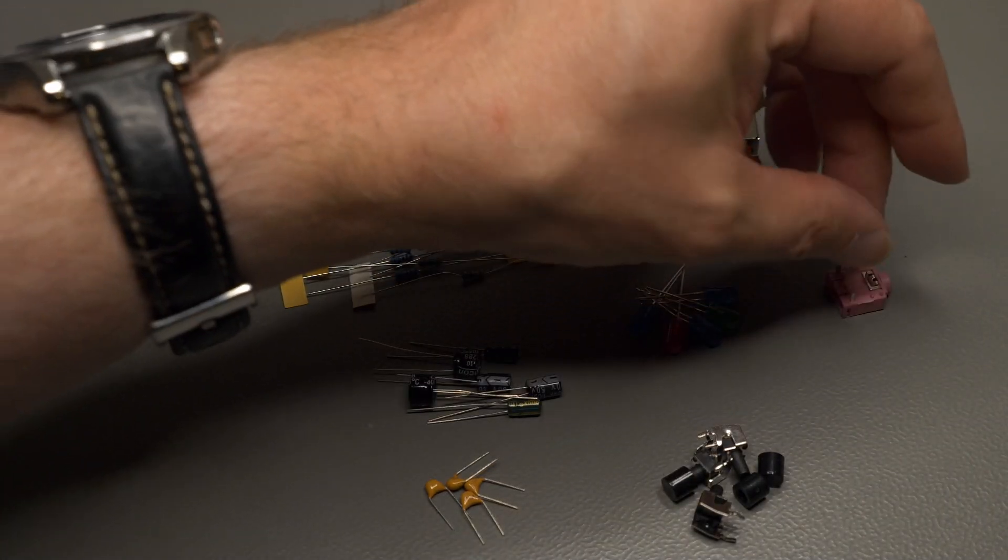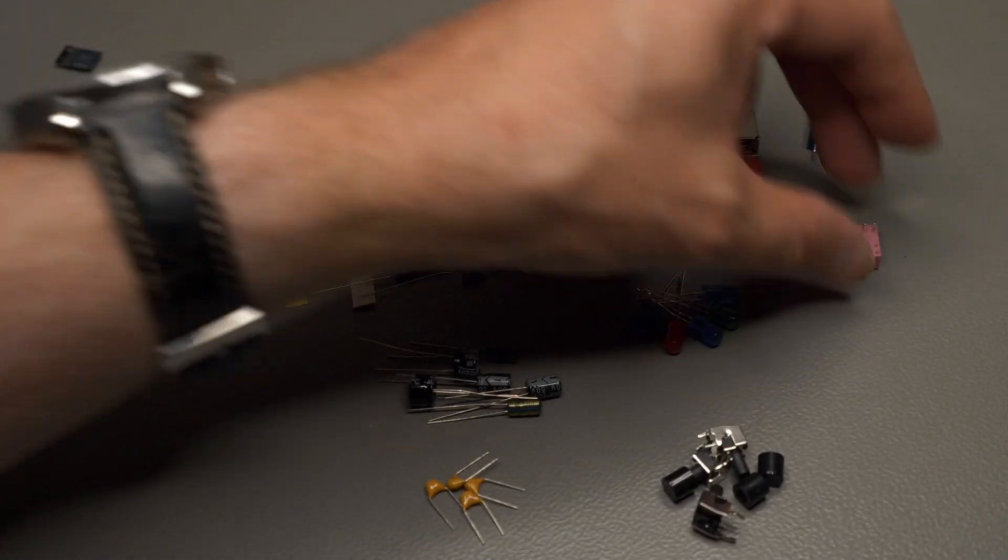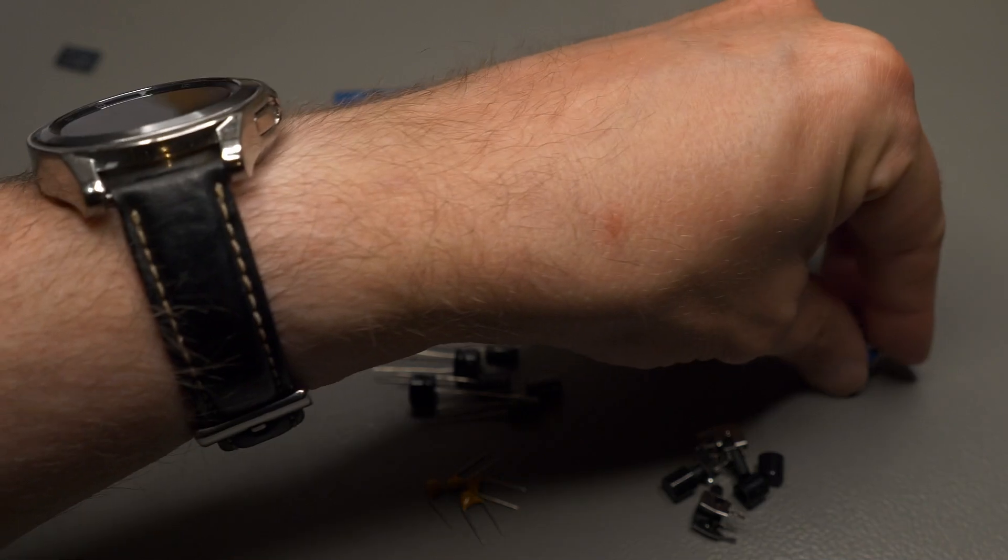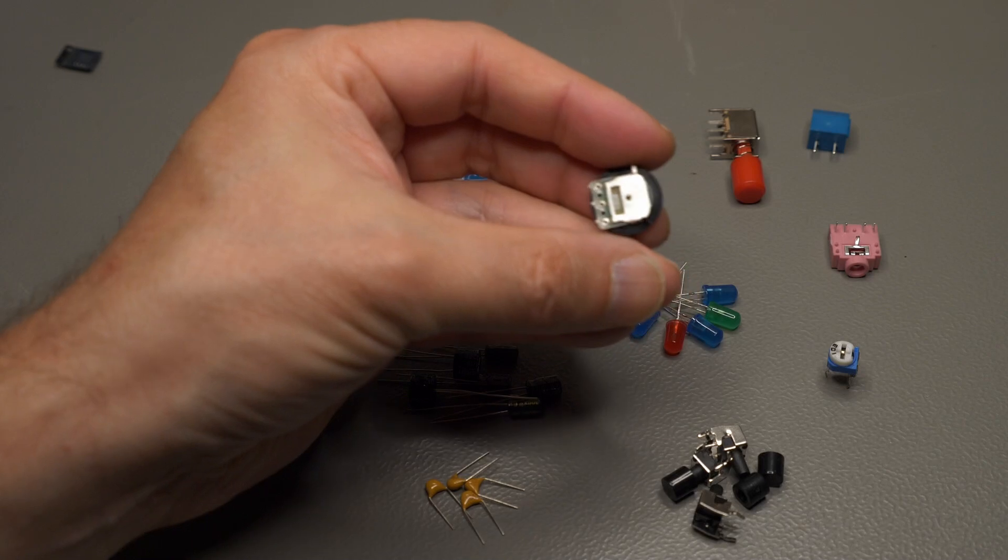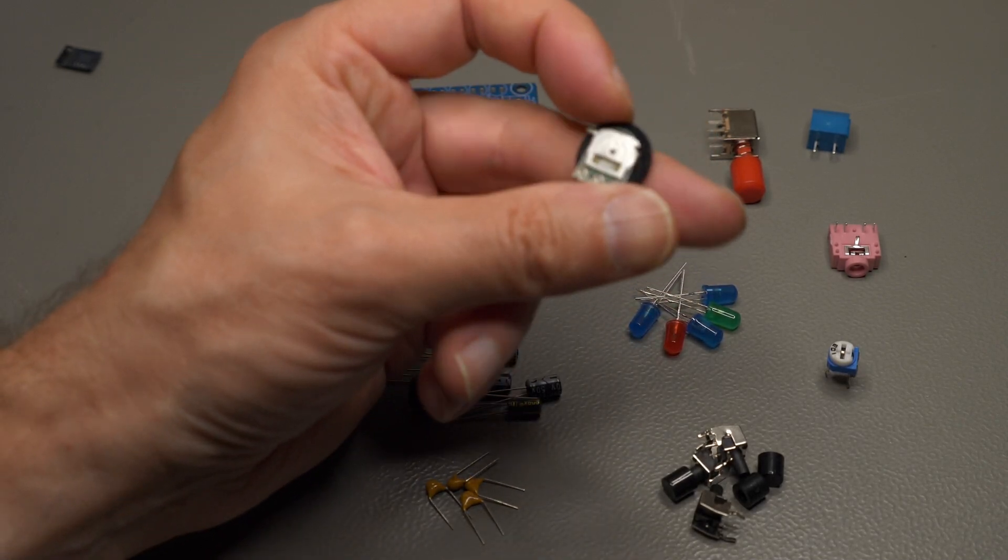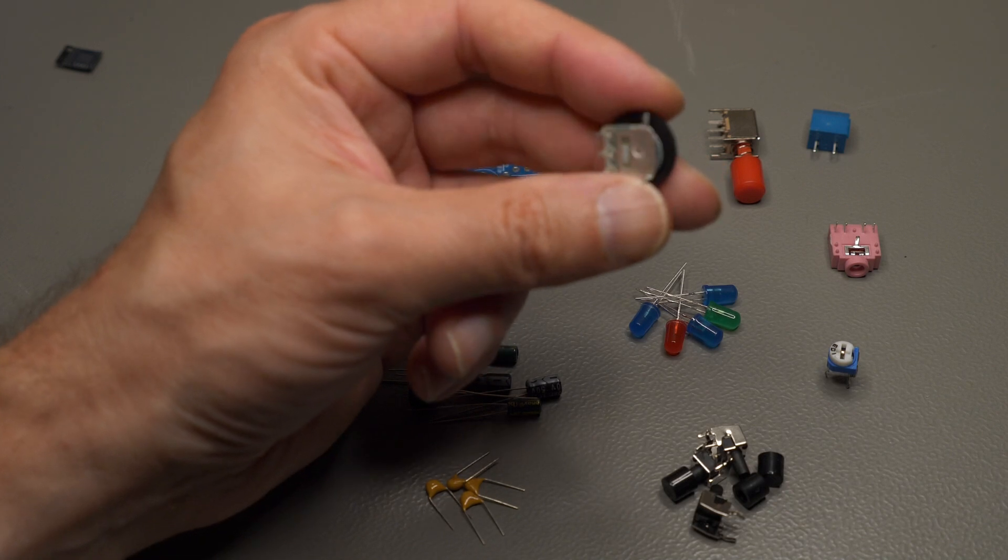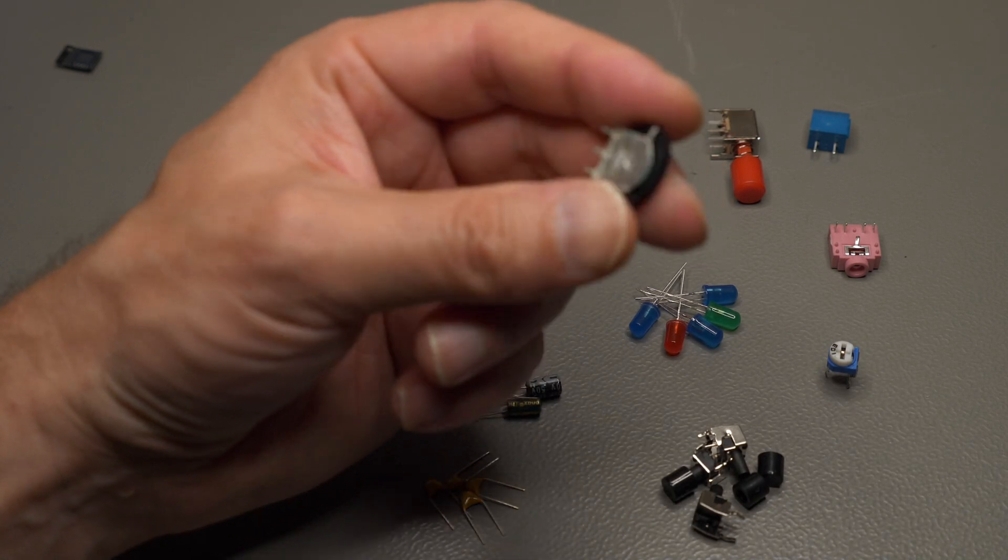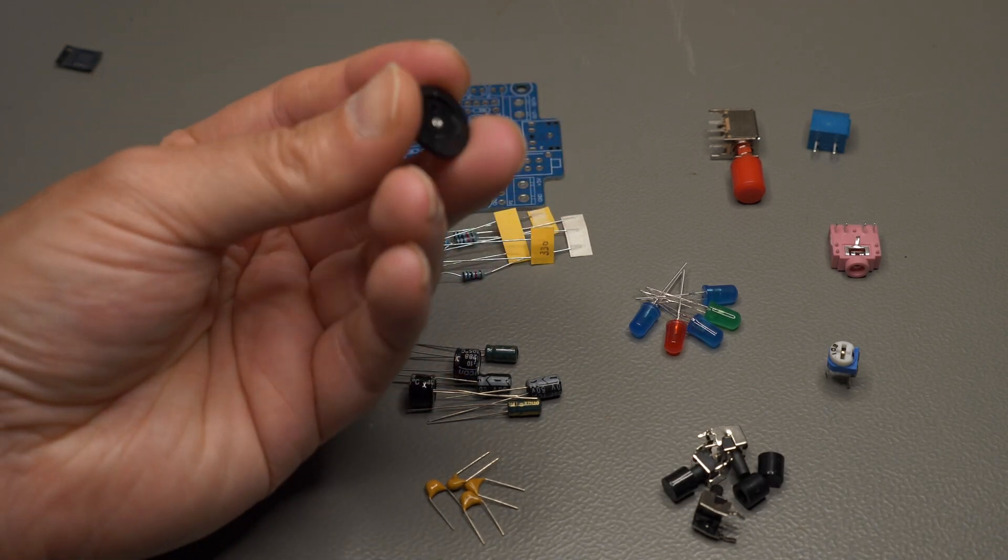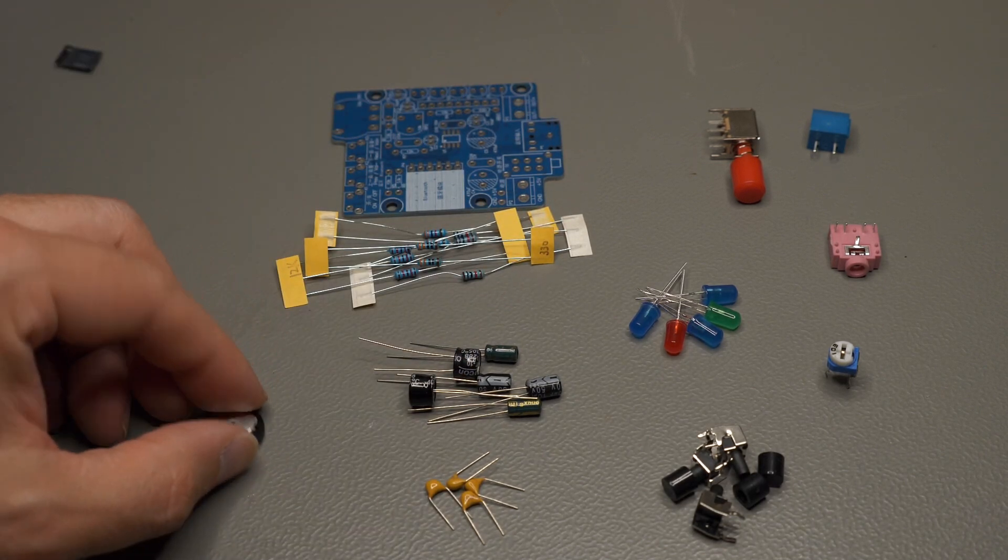Here's the 3.5 millimeter jack for the analog input. The adjustment potentiometer for the light show. I think this one is the volume control knob. This looks very flimsy. But probably very cheap as well. So here you can adjust the output volume of the amplifier, I guess.